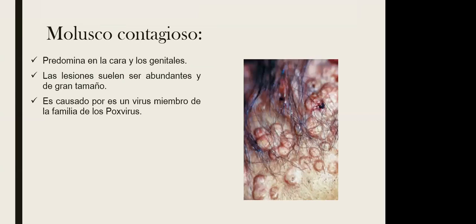El molusco contagioso predomina en cara y genitales, es causado por el virus del molusco contagioso de la familia de los poxvirus. Se caracteriza porque son lesiones abundantes de tipo papular, elevadas, de gran tamaño e incluso tamaño variable, con pápulas de distintos tamaños.